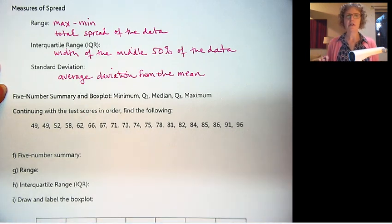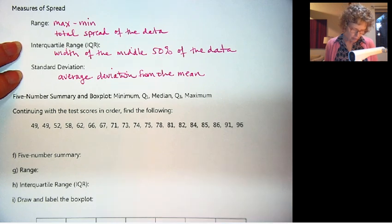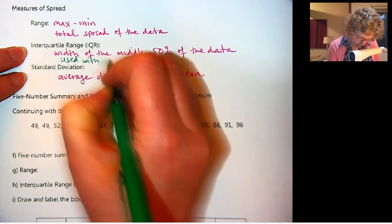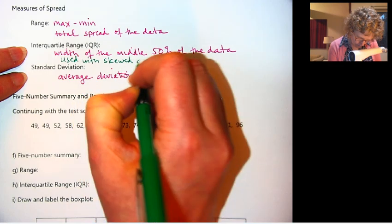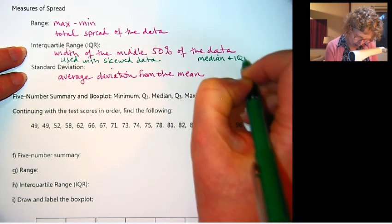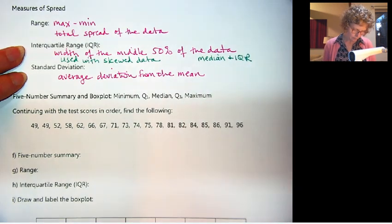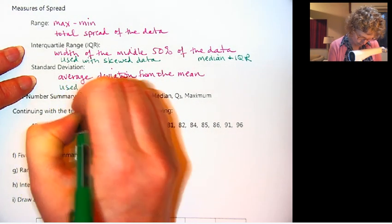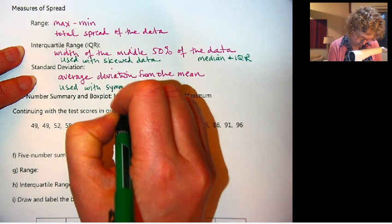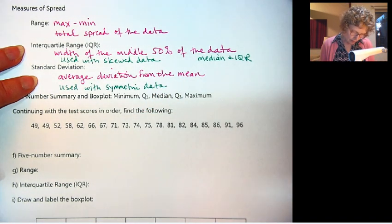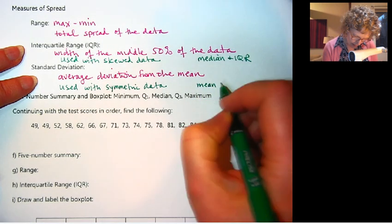Now, I mentioned in another video how the center and spread go together. There are certain measures that we want to use at certain times. The interquartile range is used with skewed data, and the standard deviation is used with symmetric data. So if your data comes out symmetric, then you would talk about the mean and the standard deviation.